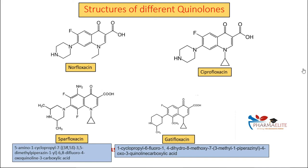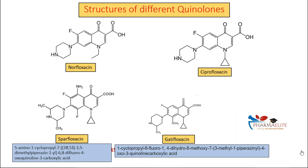Questions can be in two ways: given four structures and asked to identify, or given four IUPAC names and asked to select the correct one. For gatifloxacin, I look for: cyclopropyl at N-1, fluoro at position six, methoxy at position eight, and quinoline-3-carboxylic acid as a common feature. I compare the given options for only the differentiating functional substituents. There is no need to draw the structure repeatedly — just compare and contrast the similarities and differences. This is how medicinal chemistry can be made easy.